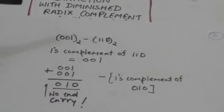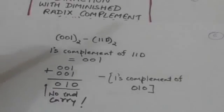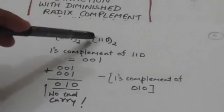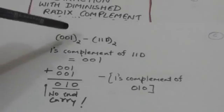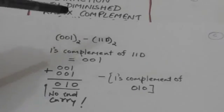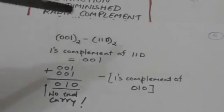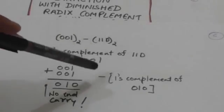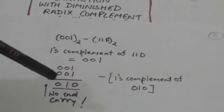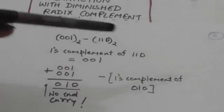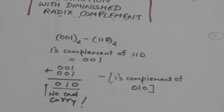Since no end carry is produced, the result would be minus the 1's complement of 010. So when we subtract 110 from 001, the result is minus the 1's complement of 010. Thank you very much.